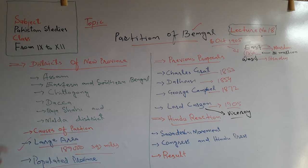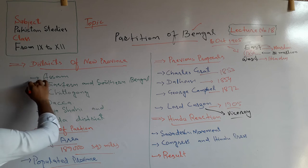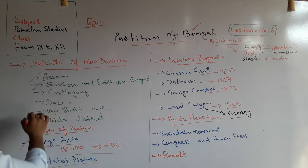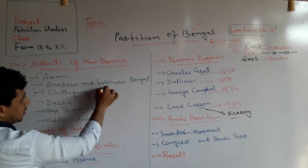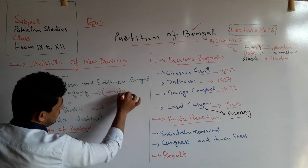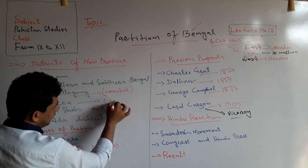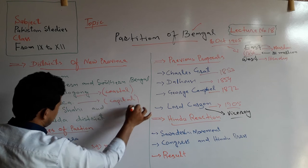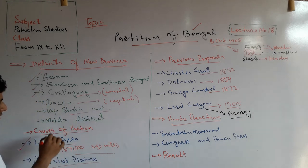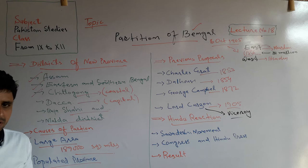The districts which were in the new province — that is, in East Bengal where Muslims were in majority — included Assam, Eastern and Southern Bengal, Chittagong (a coastal area), Dhaka, which was the capital of the new province, Rajshahi, and Malda district. These districts all formed the new eastern province.